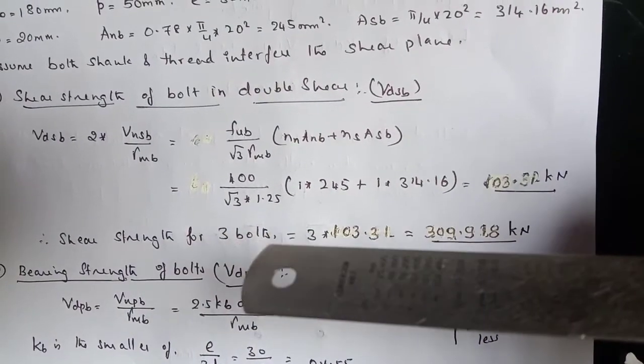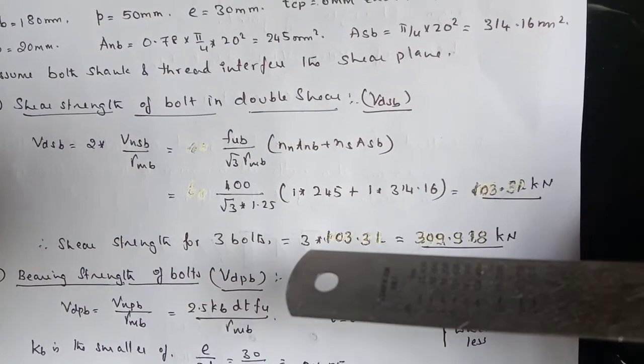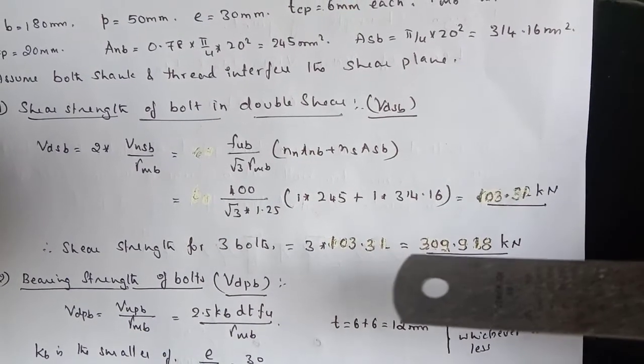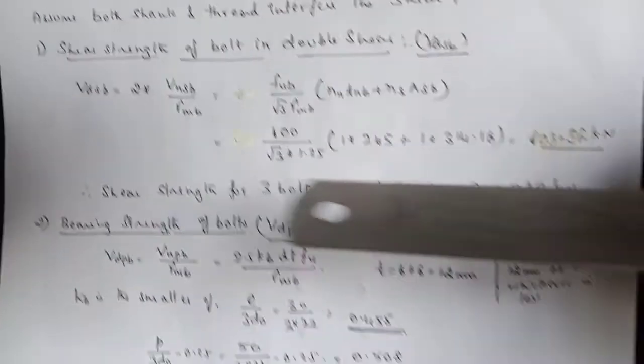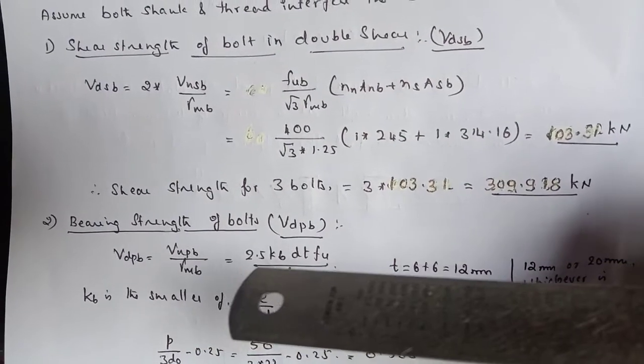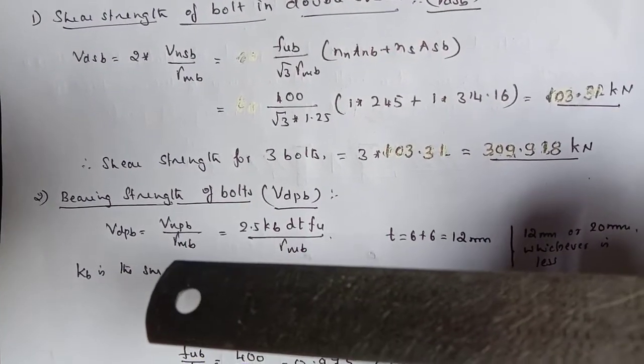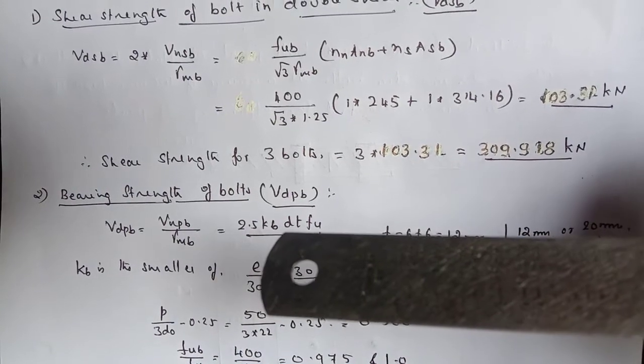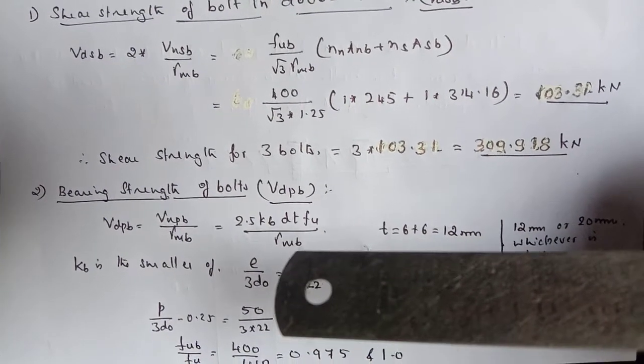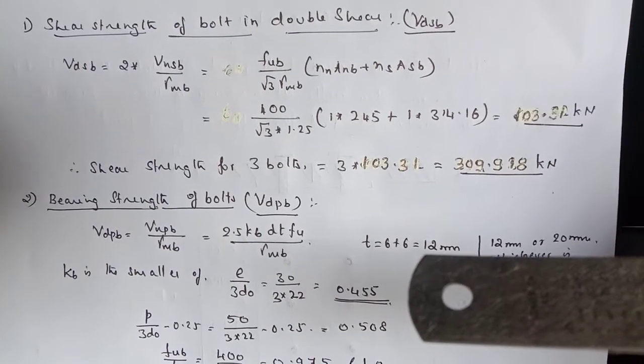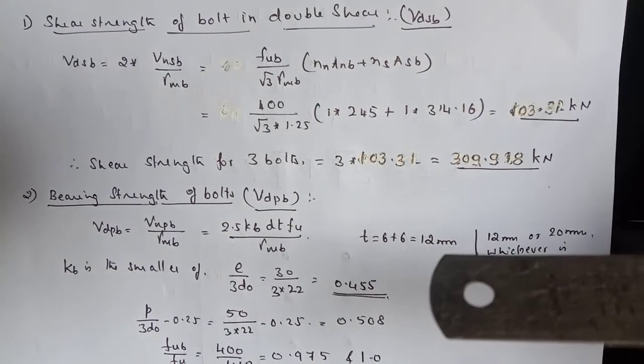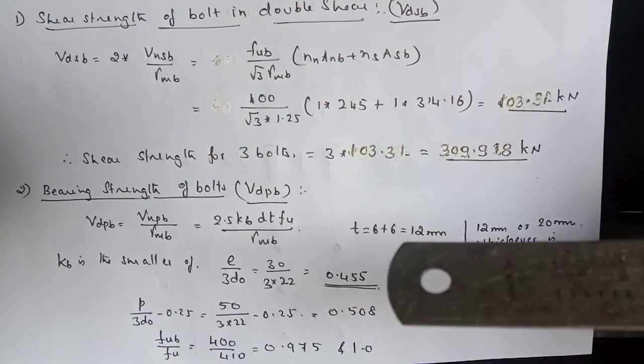So shear strength for three bolts by considering only one side, 3 into 103.31 works out to be 309.918 kilonewton. Now the bearing strength of bolt VDPB, the formula is VNPB by gamma MB. That is 2.5 KB DT FU by gamma MB. So here T is nothing but least of thickness of the cover plate or main plate.